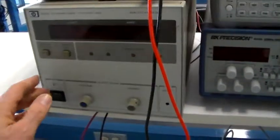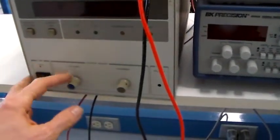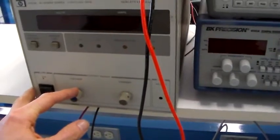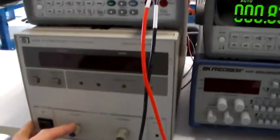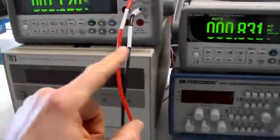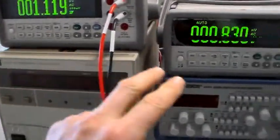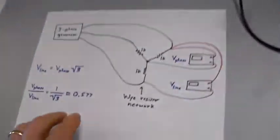So what I'm going to do is turn on my power supply, and then I'll adjust the voltage to get the line voltage at 1 volt, and then the phase voltage should be 0.577 volts. So, here we go.